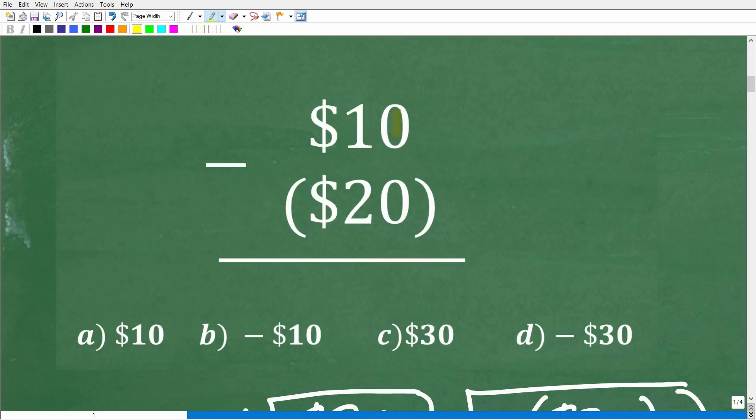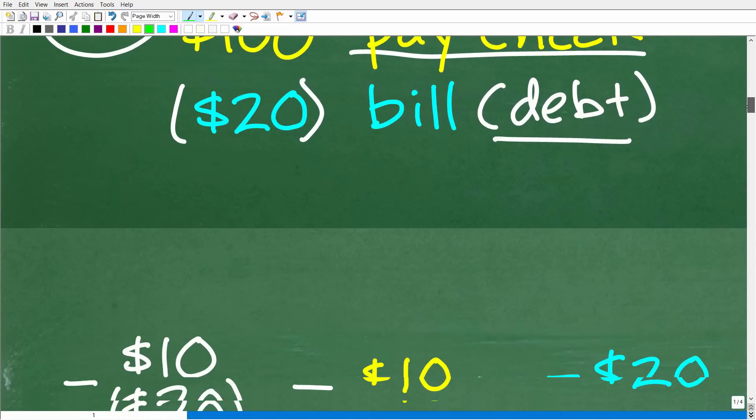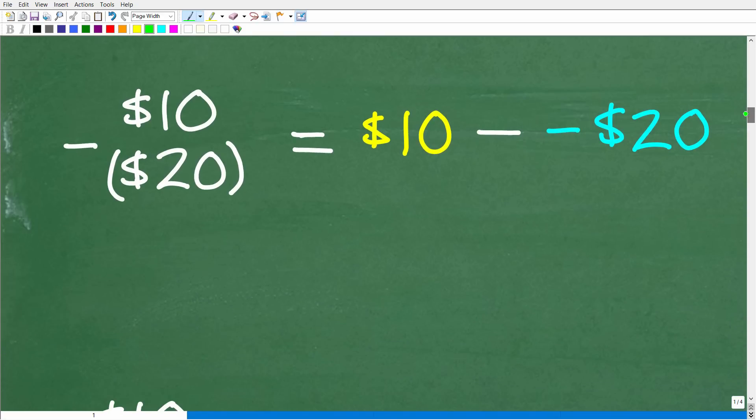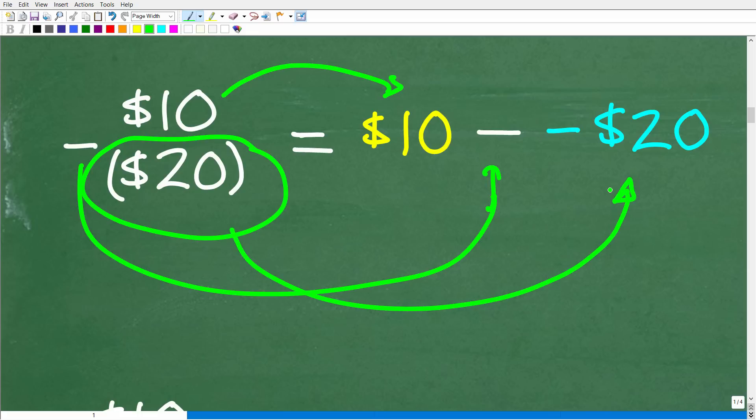Okay, so now we can think of this problem as $10 minus $20, but really this $20 is a negative $20, all right? So the parentheses really just means that this is a negative value. All right, so now that we understand this, we can kind of get into the second half of figuring this out. Okay, so $10 minus $20 in parentheses is the same thing as $10 minus, right? So we still have this minus right here, but this $20 in parentheses is a negative $20. So here is what we have to figure out. So $10 minus a minus $20.